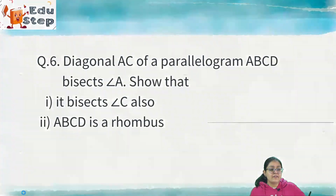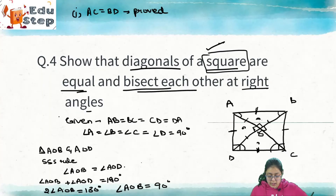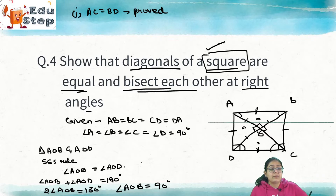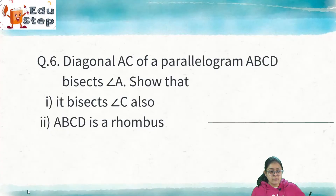Question 5: Show that if the diagonals of a quadrilateral are equal and bisect each other at right angles, then it is a square. This question is the reverse of question 4, so you can solve it very easily on your own. Moving on to question 6.